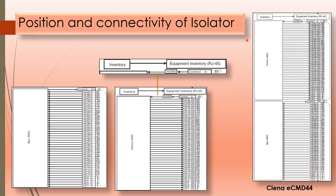Before discussing the use and significance of the isolator at the common input, we need to know its position and how it is connected to the DMUX module. Taking the example of the Ciena extended CMD44, you can clearly see the isolator is used at the common input, or the 89 port of the CMD44. Zooming in, you can see clearly that this isolator is placed just before the common input.